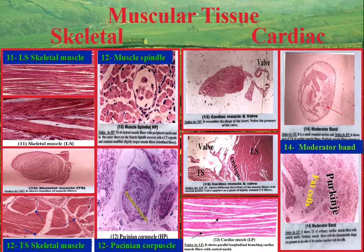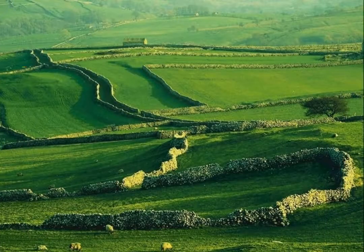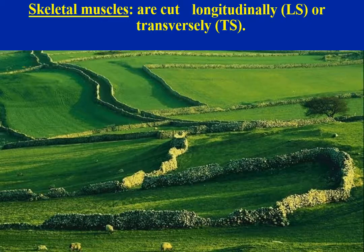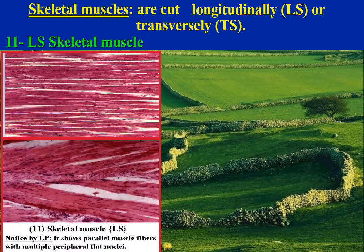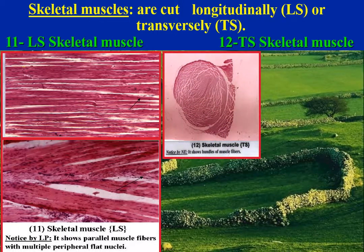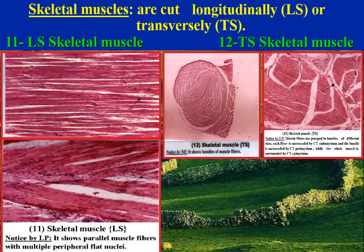Skeletal muscles are cut either longitudinally (LS) or transversely (TS). Examples: LS of skeletal muscle showing parallel bundles of muscle fibers separated by loose connective tissue. TS of skeletal muscle showing bundles of muscle fibers separated by loose connective tissue and covered from outside by connective tissue called epimysium.